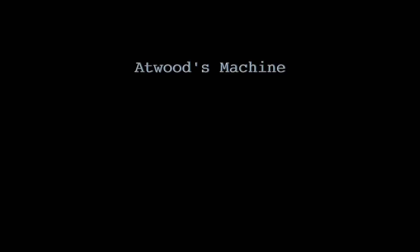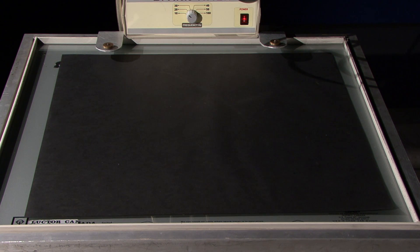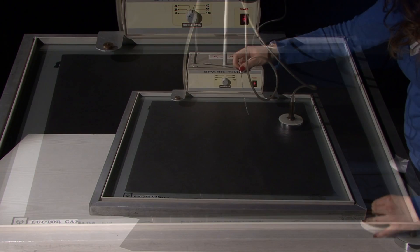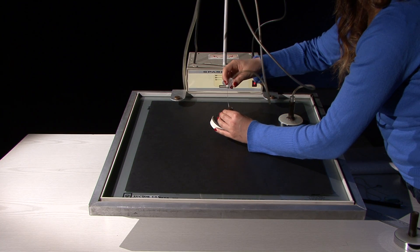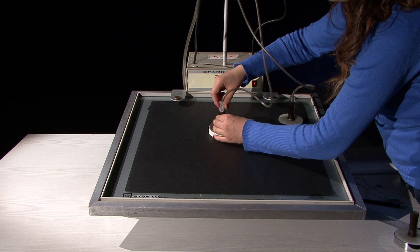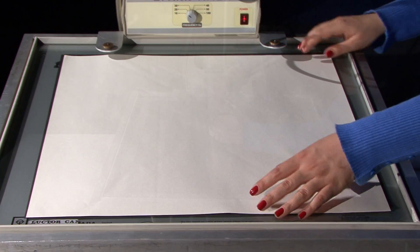Third experiment, Atwood's machine. In this experiment, you will use pucks with different masses. First, add holders to the pucks. Then place the datasheet.